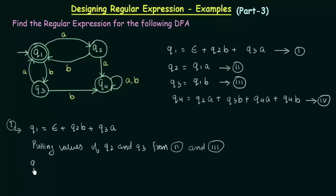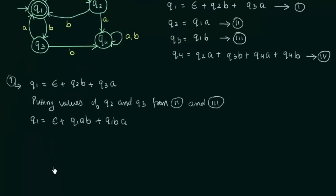Q1 equals epsilon plus — Q2 can be written as Q1A, so Q1A·B, plus Q3 can be written as Q1B, so Q1B·A. Now we get this and from here I see that I have Q1 common, so I can take out Q1 common. So we get: epsilon plus Q1(AB plus BA).